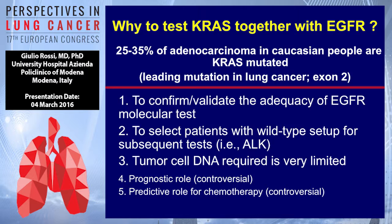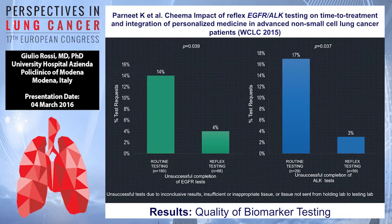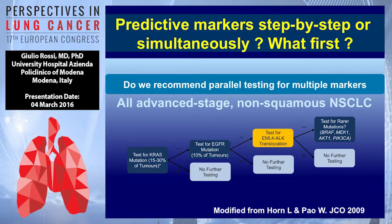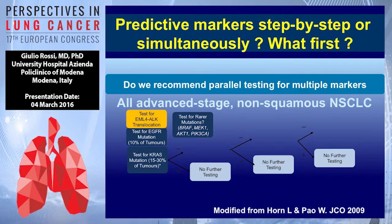Another important point is reflex testing — determining predictive markers reflexively. This increases the success of the technique and significantly reduces turnaround time, as shown in the experience presented last year in Denver. It's very important that once a patient is identified as having advanced non-small cell lung cancer with non-squamous histotype, the pathologist determines EGFR mutation, ALK, and other tests as a reflex test, simultaneously preserving the tumor tissue we have.